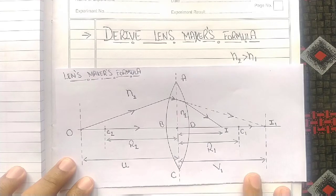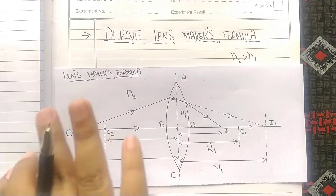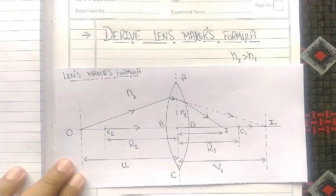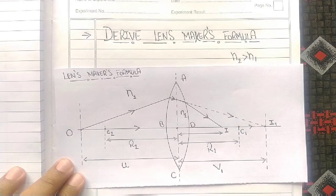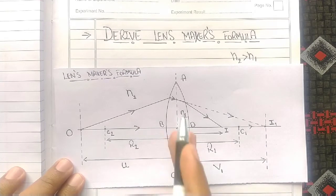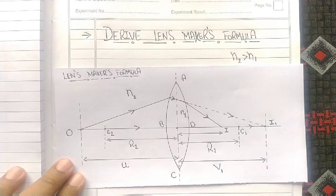O is the object position and I is the image position. U is the object distance and V1 is the image distance. I used V1 because it is a particular case which you will learn in this derivation.